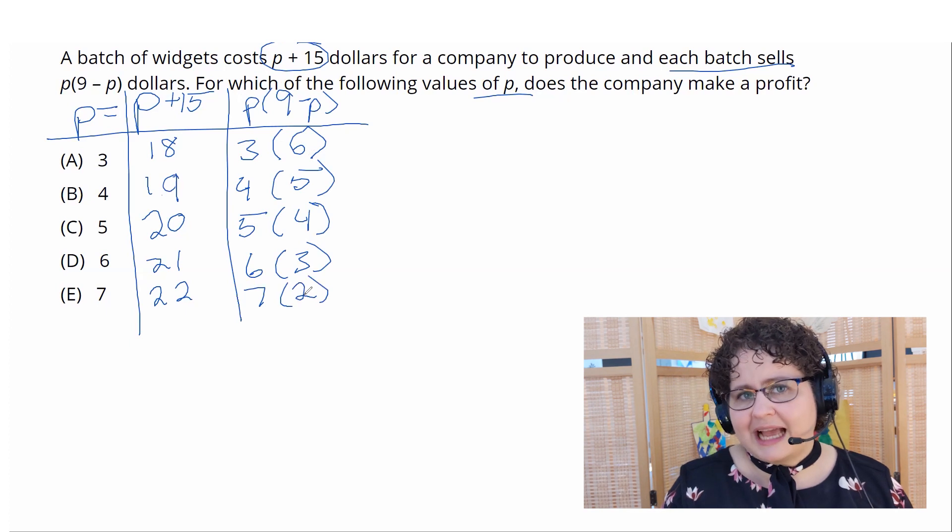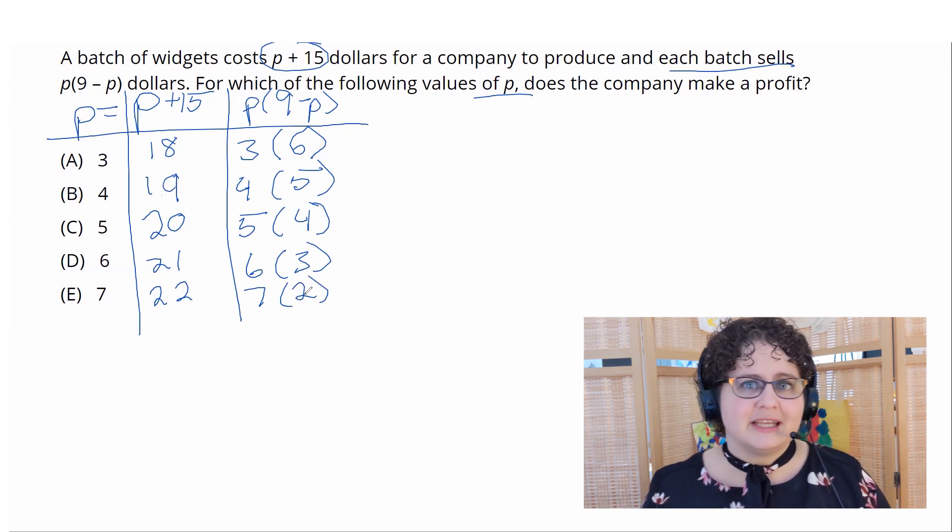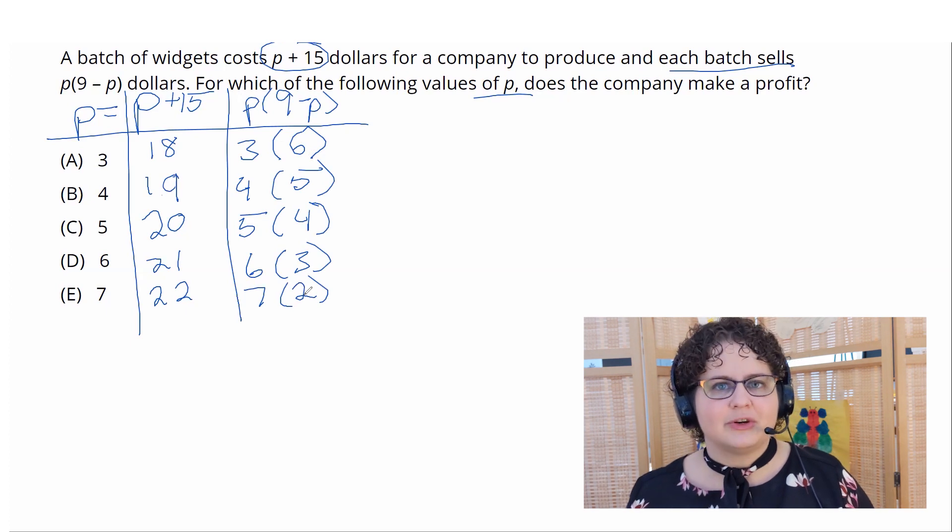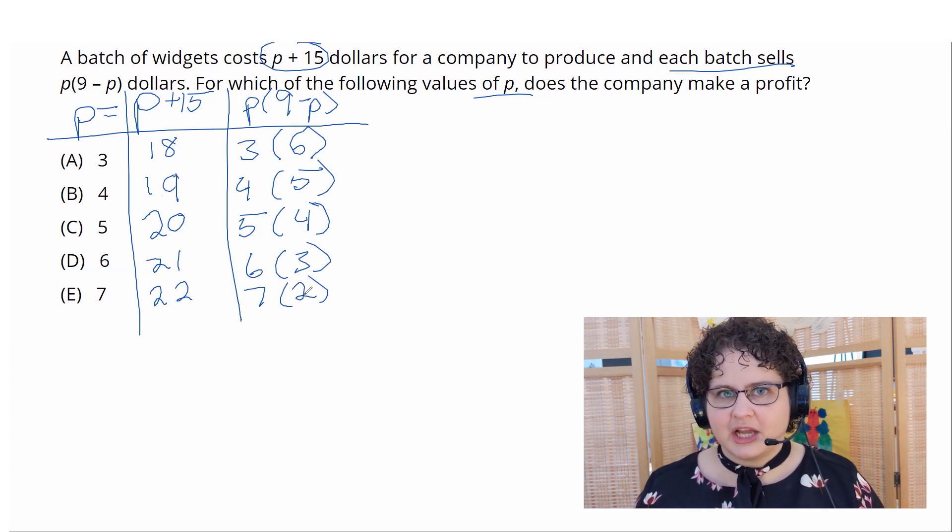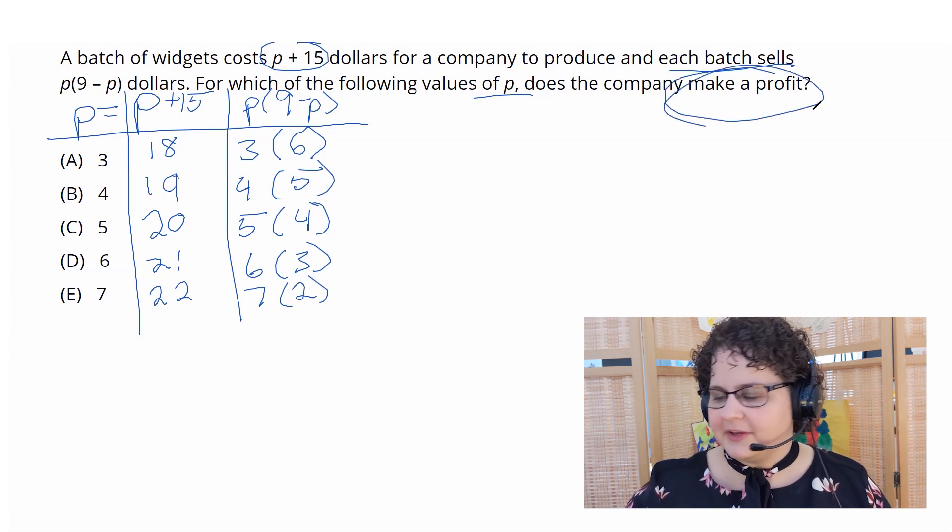So now the question is, I've got all these values, I've plugged everything into the expression, but how do I translate that into picking an answer? Here's where the logic comes in. It's asking, at what point do we start making a profit? Well,